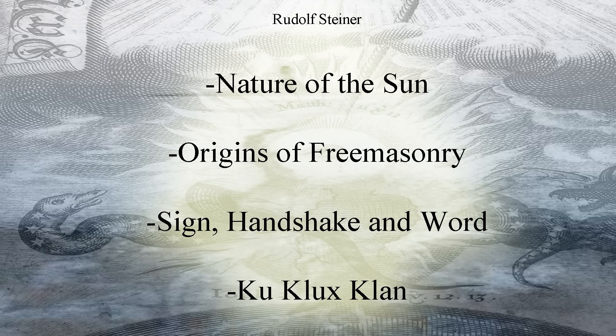Nor churches or centers for the arts of this kind, for it was all one then. In the ancient mysteries, as they were called, you had school, art center, and religion all in one. They only became separate later. We could say that in our central European regions this happened only in the eleventh or twelfth centuries. Monasteries used to be memorials of times gone by. But in very early times, school, church, and art center were one.